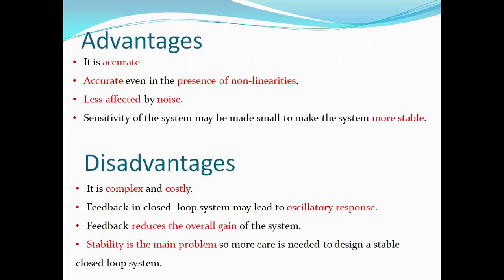What are the advantages of a closed loop control system? It is accurate, even in the presence of non-linearities. It is less affected by noise. Sensitivity of the system may be made small to make the system more stable. What are the disadvantages of a closed loop system? It is complex and costly. Feedback in a closed loop system may lead to oscillatory response. Feedback reduces the overall gain of the system. Stability is the main problem, so more care is needed to design a stable closed loop system.